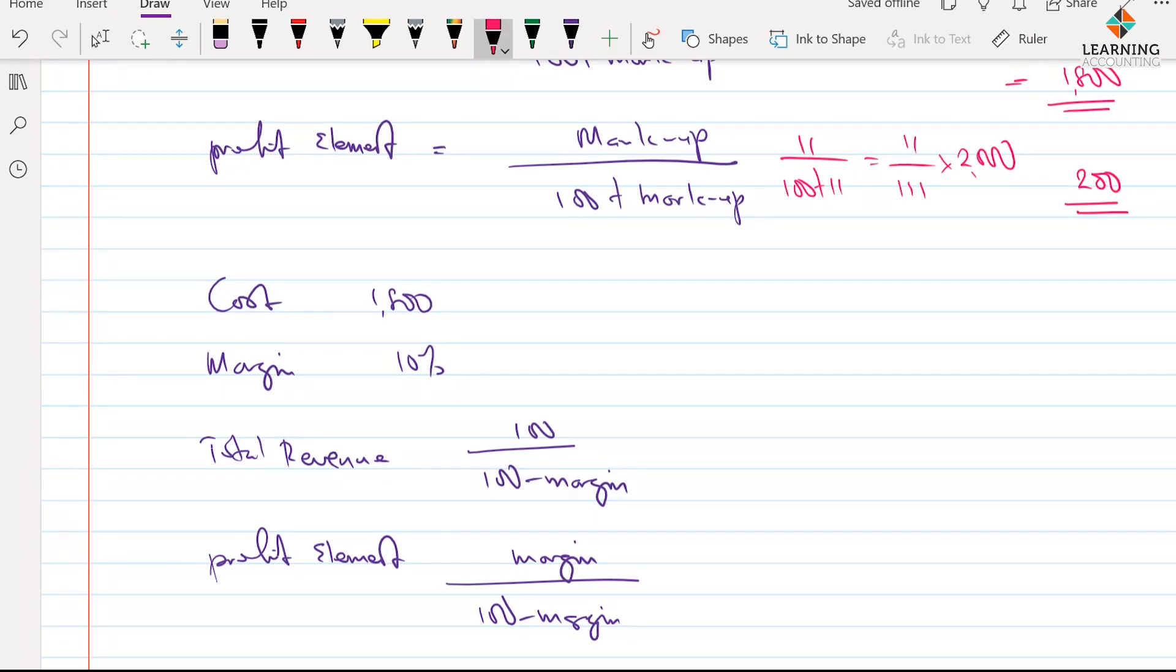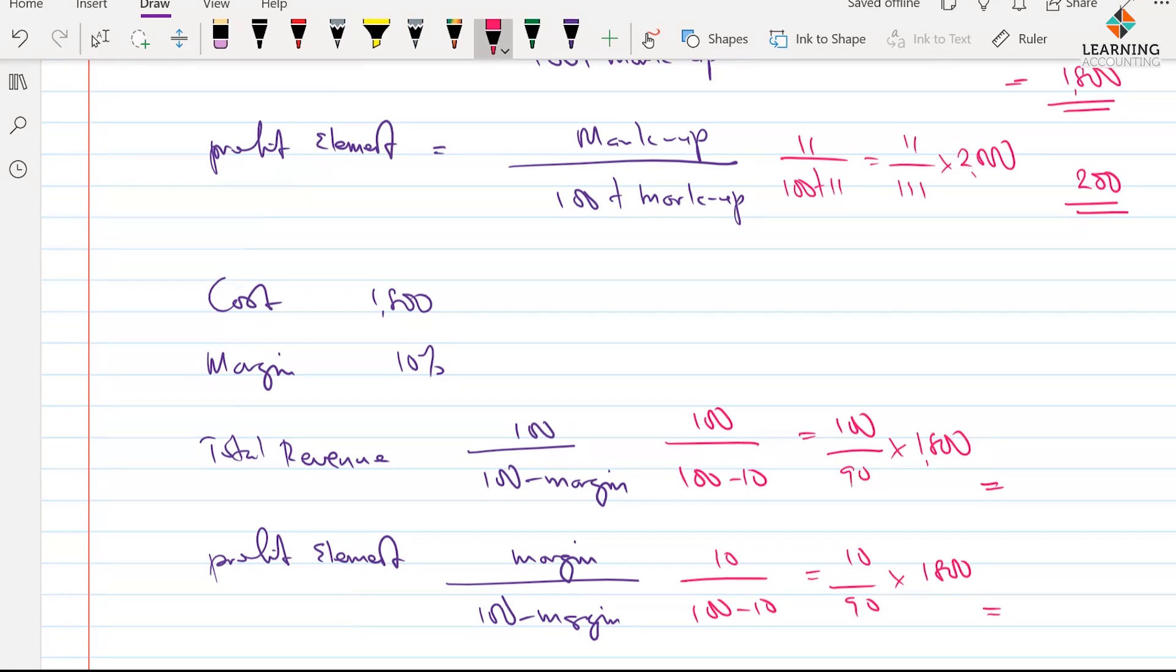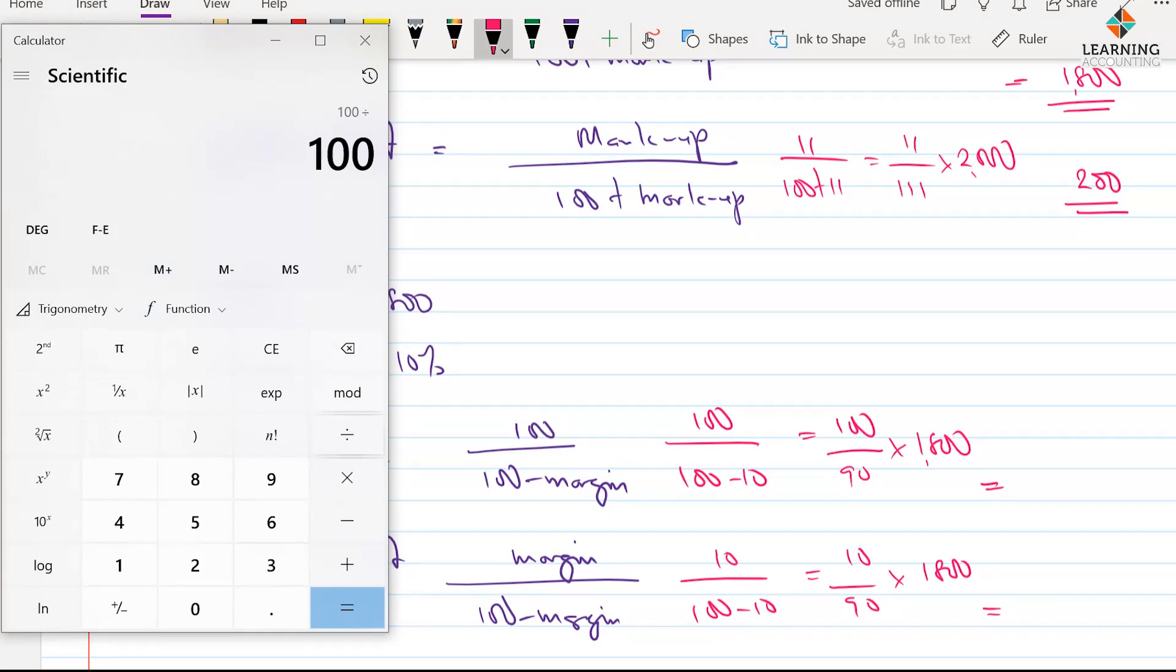And if we apply the figures we have already, we have 100 over 100 plus 10. Sorry, I say plus 10, minus 10. And this will give us 100 over 90 multiplied by 1,800. I'm going to do the same thing here. This will be 10 over 100 minus 10, which will give me 10 over 90 multiplied by 1,800. So, if we also use our calculator, 100 divided by 90, multiplied by 1,800. Of course, we have our 2,000.